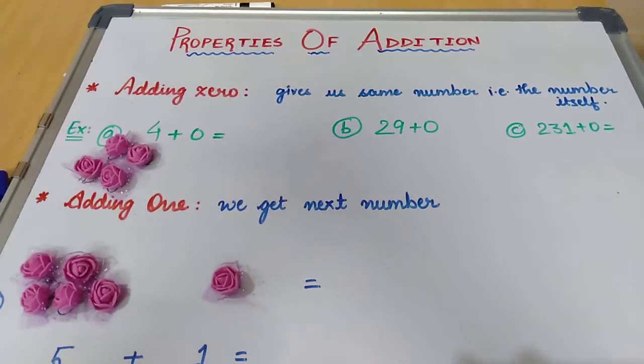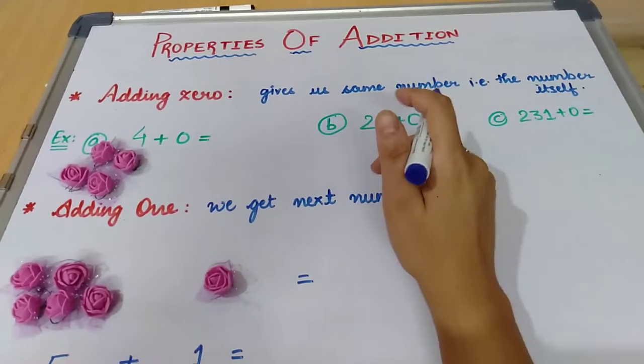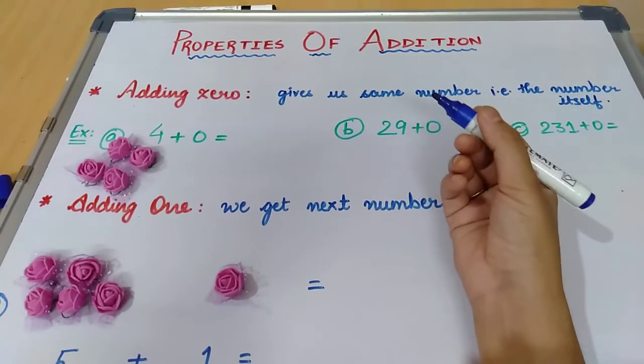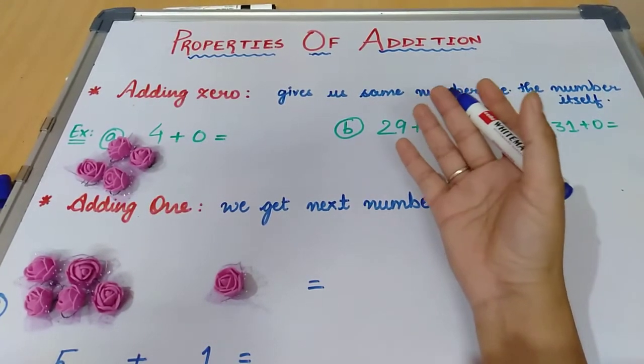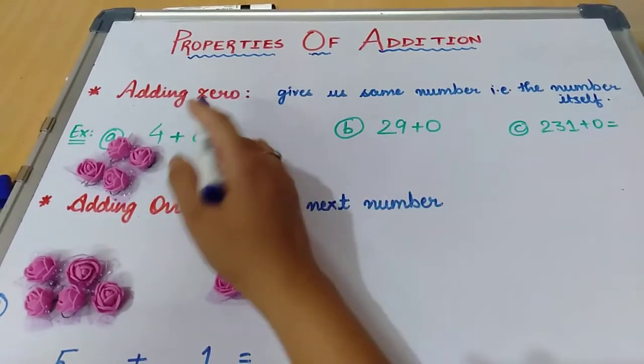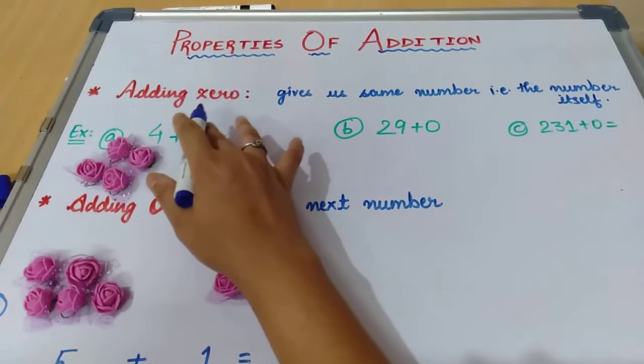So students, today we are going to learn properties of addition. Now these properties are certain rules that we have to use when we are adding some numbers. So let us see the properties. First one is adding zero.